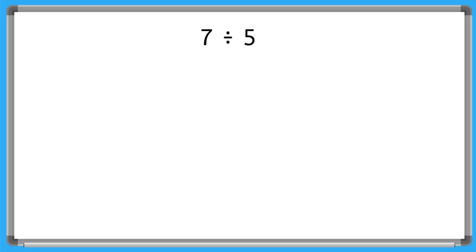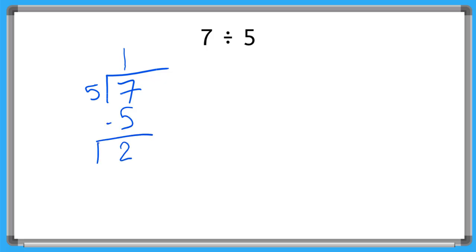So here it says 7 divided by 5. If I write that in standard form it's going to look like: 5 goes into 7 how many times? We know 5 goes into 7 one time, and 1 times 5 is 5, and if I subtract I get a 2. So now I'm saying 5 goes into 2 how many times? It can't go in a whole number, so traditionally I would say 1 with a remainder of 2. That's writing my remainder as a whole number.